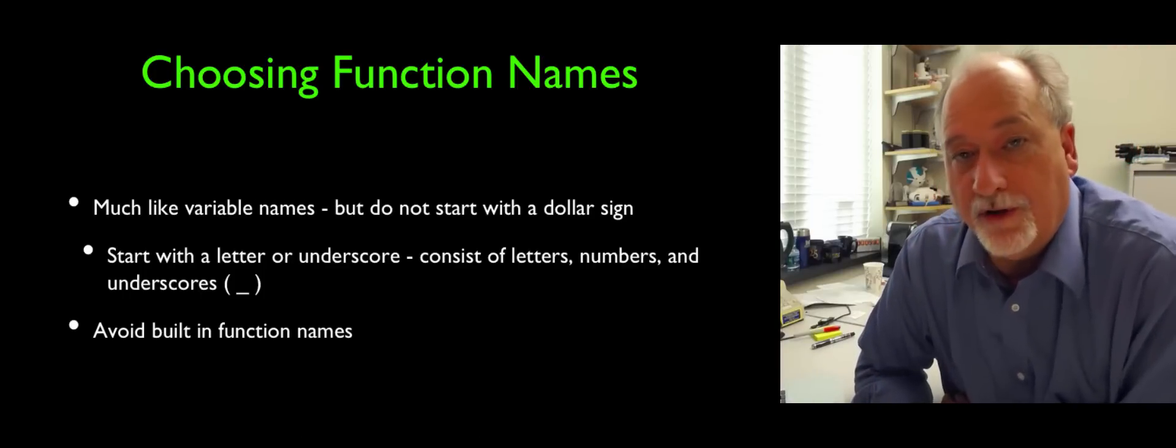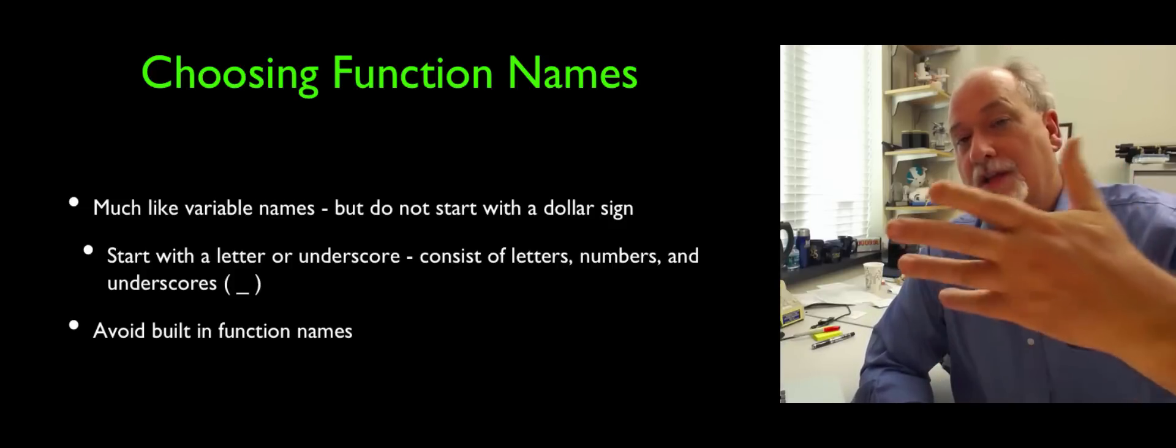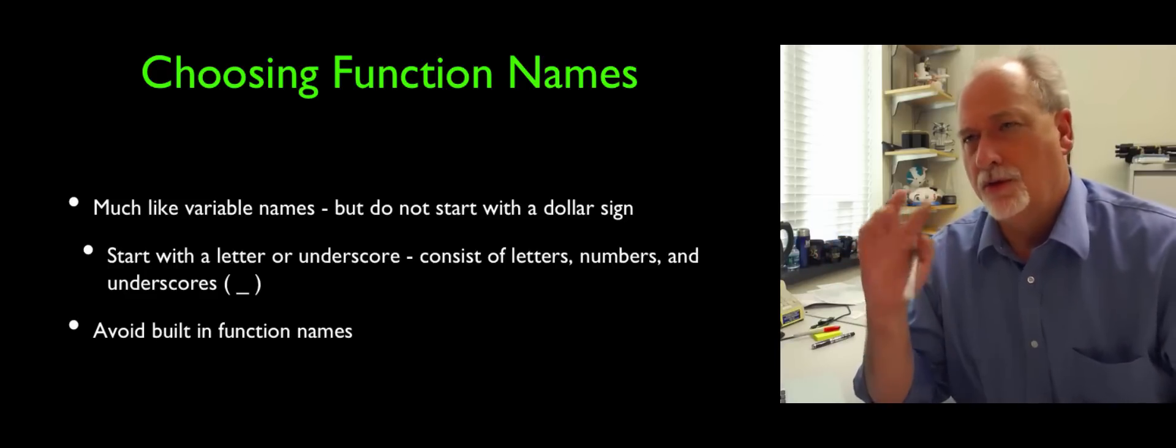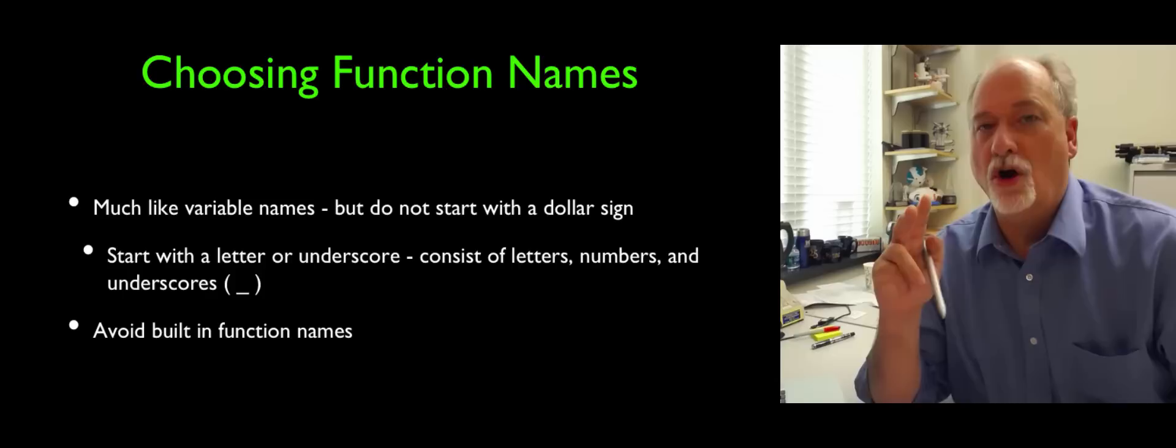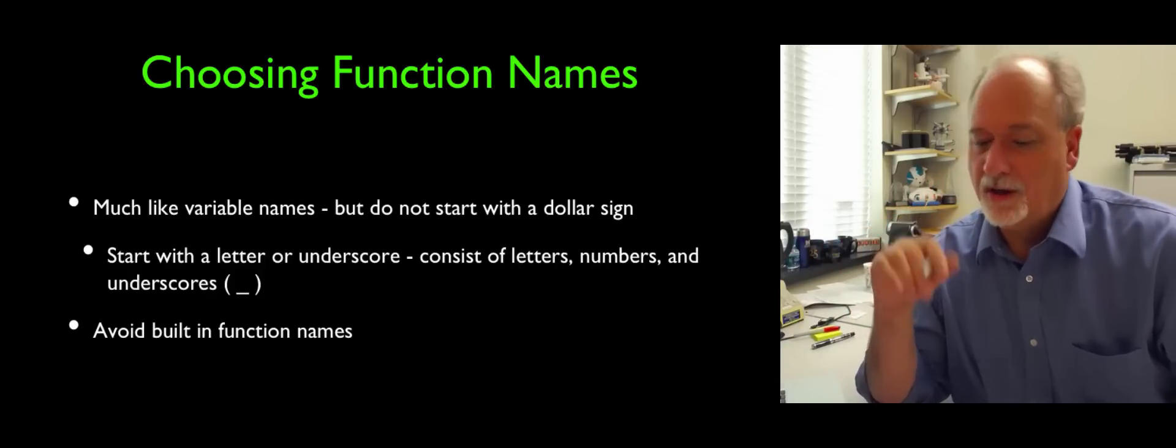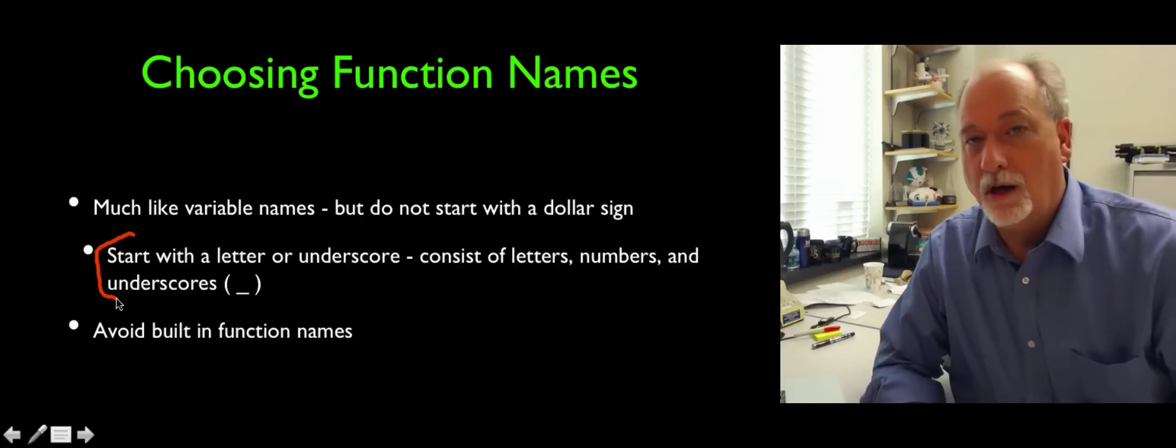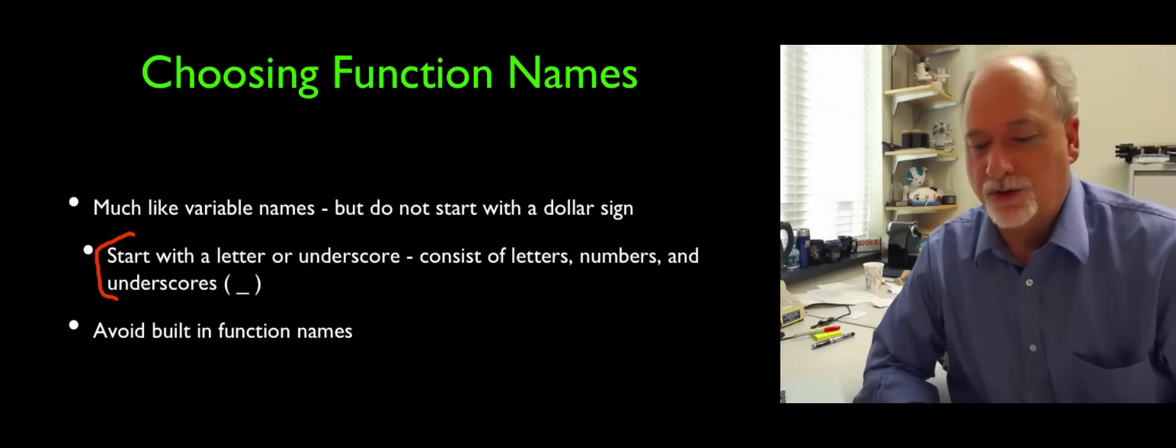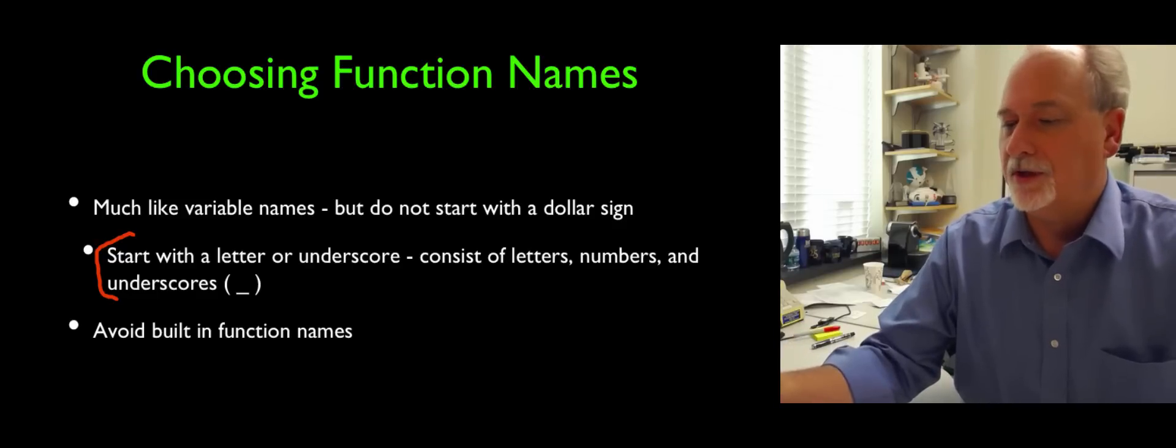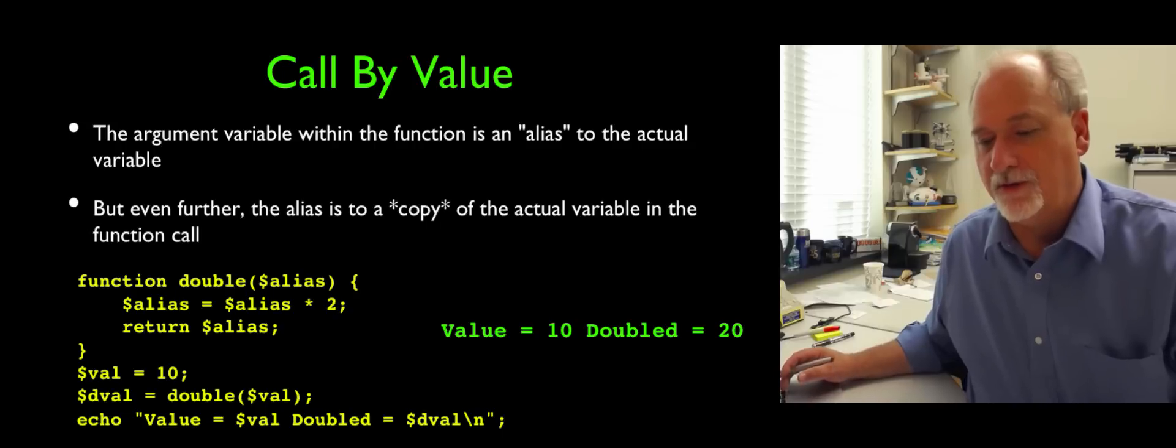You can name function names very much like variables, but they don't start with dollar sign. That's one of the nice things in code. Both the built-in functions and the functions that you define don't have dollar signs. And so it's a way to automatically know whether it's a variable or a function. Even though I don't like the dollar sign, that's a good side effect of the dollar sign. It starts with a letter or an underscore and then has the numbers and underscores and letters after that. And of course, you do not want to write a function that overwrites the built-in function names because then your code and everyone else's code is going to get sort of funky.